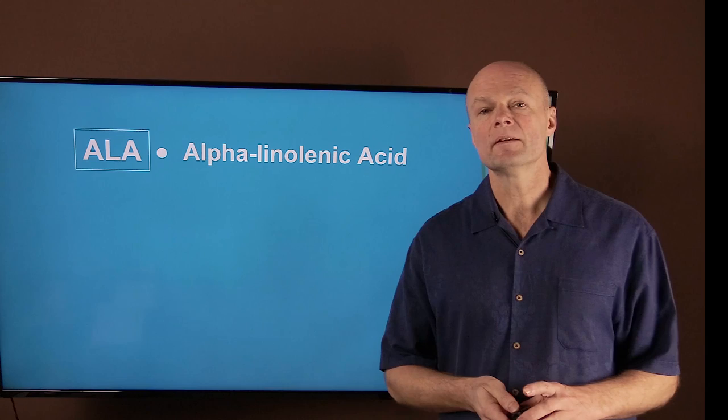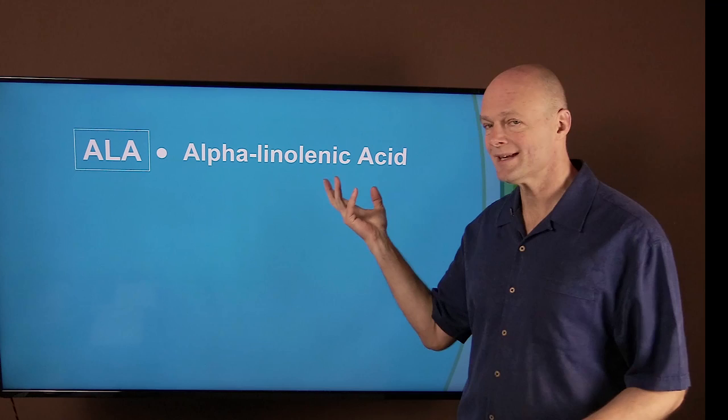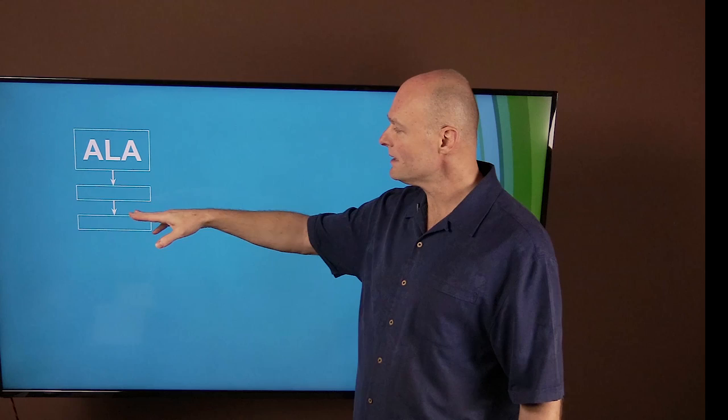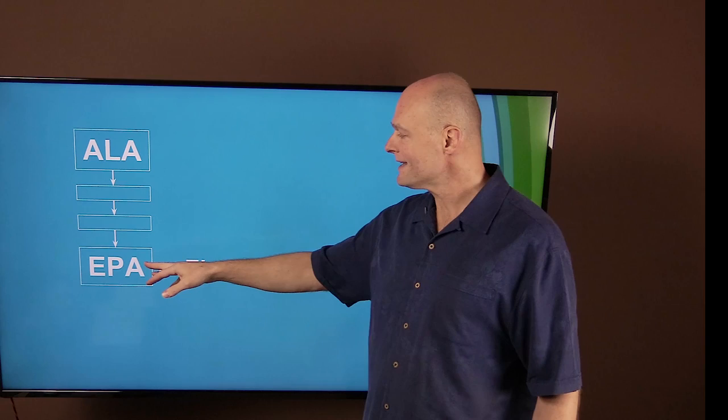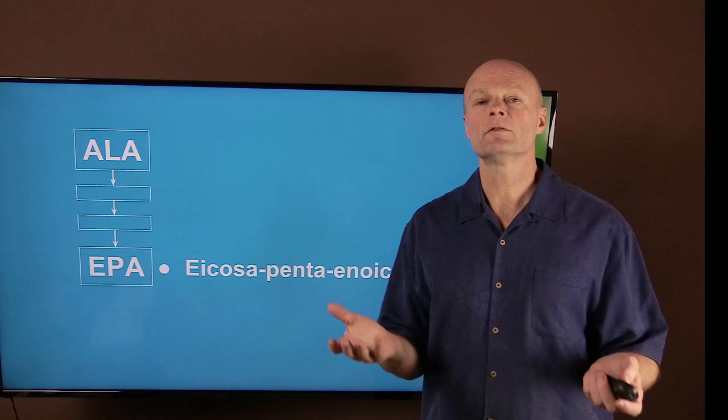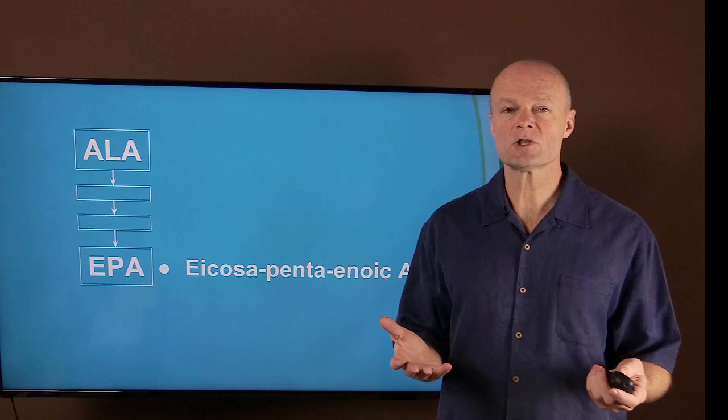So here's what's actually happening in the body. You eat the vegetable source, the ALA, known as alpha-linolenic acid. And it gets converted into a couple of intermediaries that we don't concern ourselves with. But eventually it becomes EPA or eicosapentaenoic acid, which is an anti-inflammatory. That's why it's so beneficial for most degenerative conditions, especially heart disease.